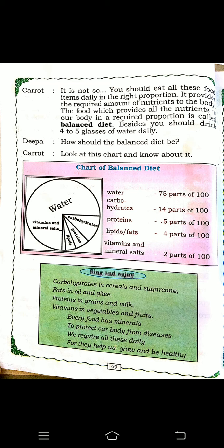In Vitamin A, the food items that contain it are green and yellow vegetables, fruits, leafy vegetables, carrot, butter, ghee, milk, and egg. If we eat these, it gives us good eyesight, healthy skin and teeth, and it protects us.